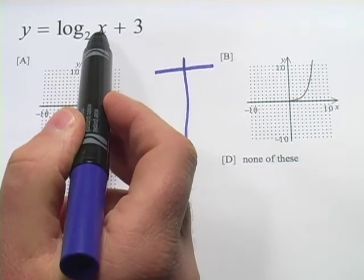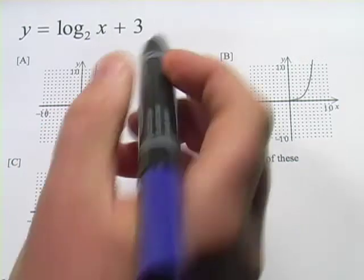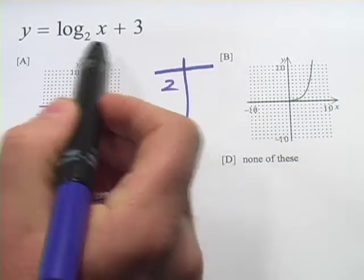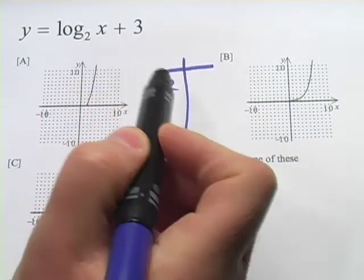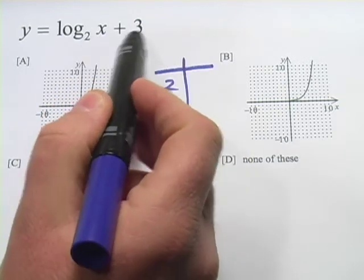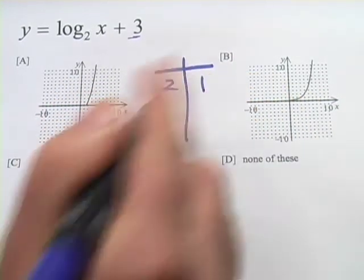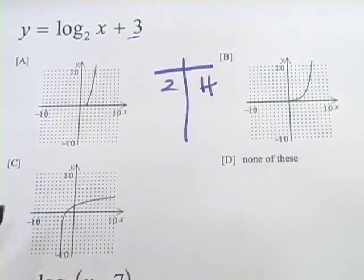So let's see, let's put in 2 for x because 2 to the first power is 2, right? So the power then is going to be 1 and then plus 3, 1 plus 3 is 4. So the point 2, 4 should be on this graph.